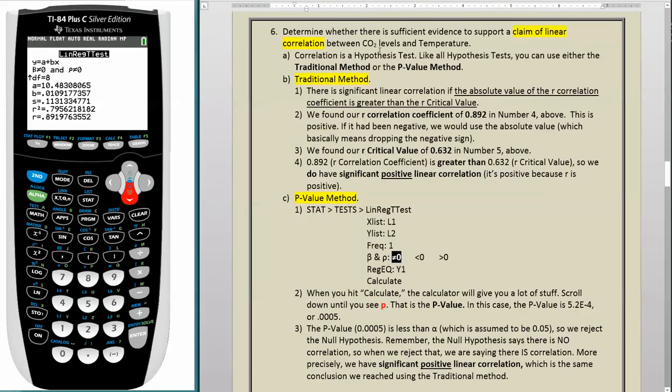Now we're going to determine whether there is sufficient evidence to support a claim of linear correlation between CO2 levels and temperature. Remember, correlation is a hypothesis test. Like all hypothesis tests, you can use either the traditional method or the p-value method. First we're going to do the traditional method. There is a significant linear correlation if the absolute value of the R correlation coefficient is greater than the R critical value.